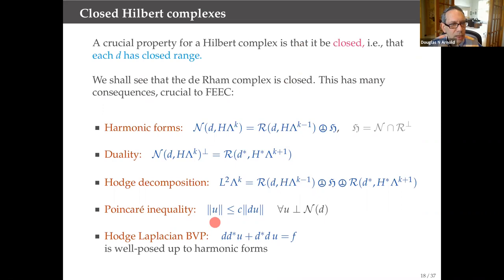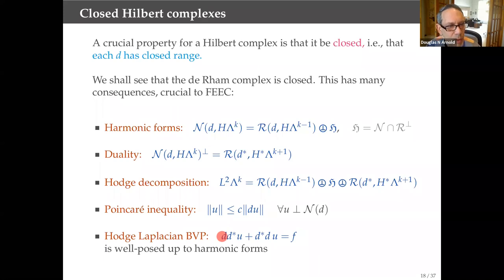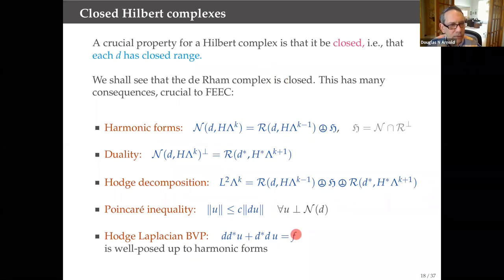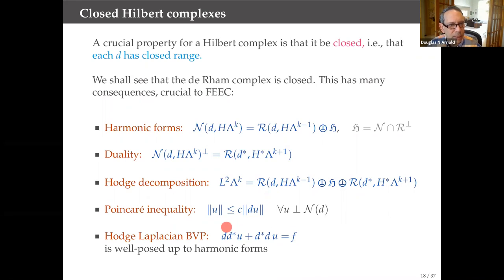You also get the Poincaré inequality: ‖u‖ is bounded by ‖Du‖ in L2, as long as u is orthogonal to the null space of D. Out of the Hodge decomposition and the Poincaré inequality, you can prove that the Hodge-Laplacian is a well-posed boundary value problem, but well-posed exactly up to the harmonic forms. For each harmonic form you must impose a side condition on the data, and the solution is determined up to addition of a harmonic form. Now you can see what's behind finite element exterior calculus: the closed Hilbert complex structure leads to well-posedness of elliptic PDEs. To discretize these PDEs stably, you want to capture these same structures at the discrete level.